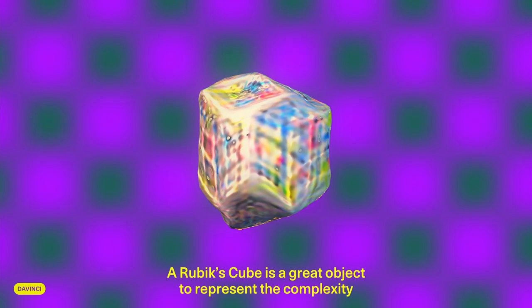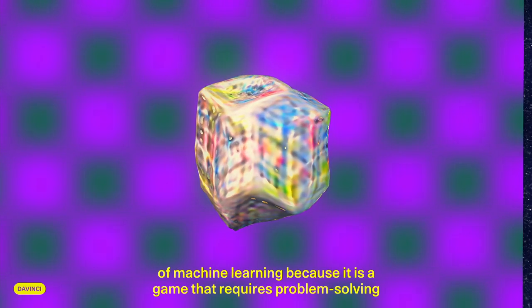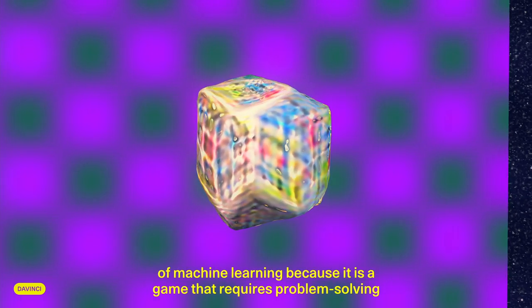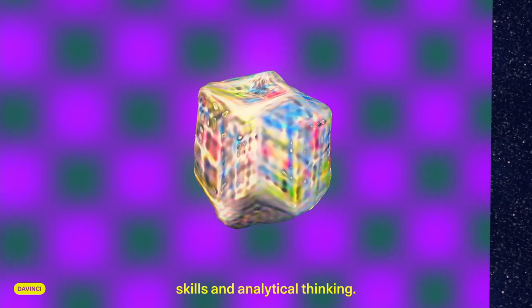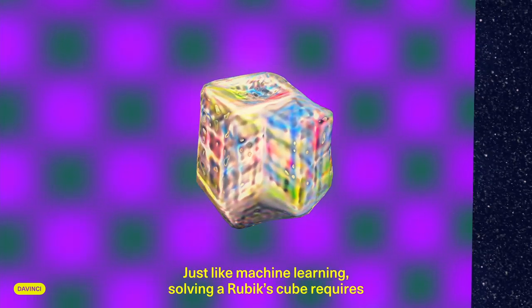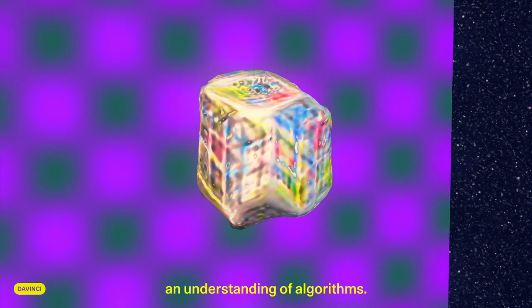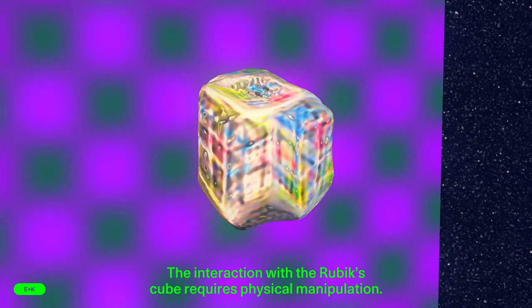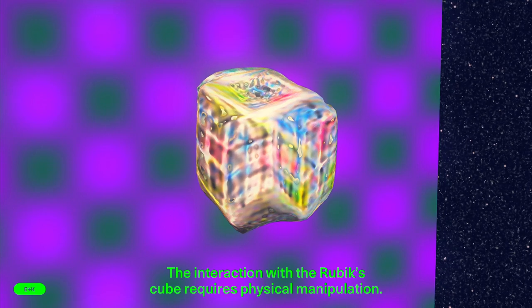A Rubik's Cube is a great object to represent the complexity of machine learning because it is a game that requires problem-solving skills and analytical thinking. Just like machine learning, solving a Rubik's Cube requires an understanding of algorithms. The interaction with a Rubik's Cube requires physical manipulation.